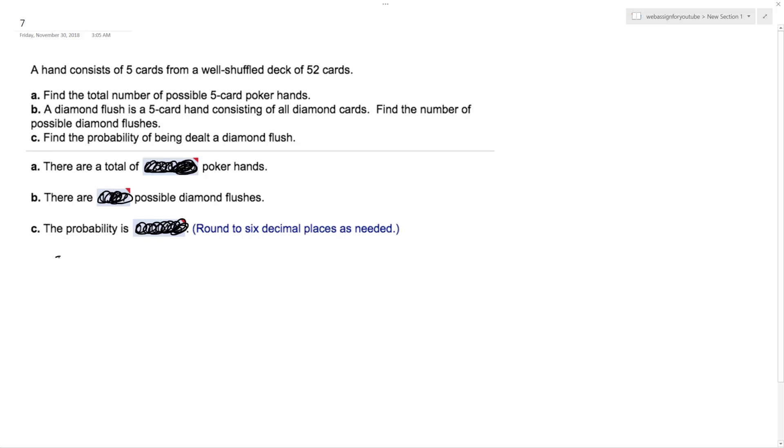So it's just a combination. So it's going to be C, N, R. And what we're going to get is C 52 comma 5. So this ends up being equal to 52 factorial over 52 minus 5 factorial. So it's a fairly large number. It ends up being 2,598,960 options.